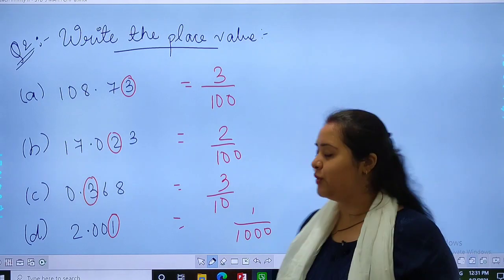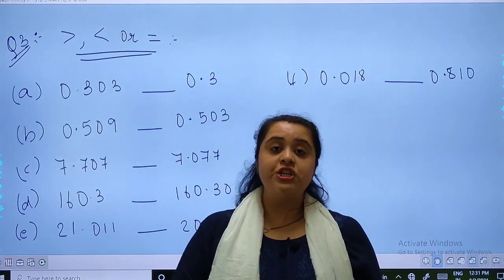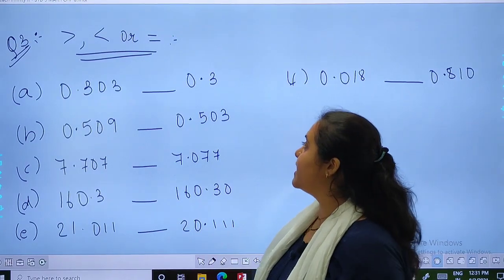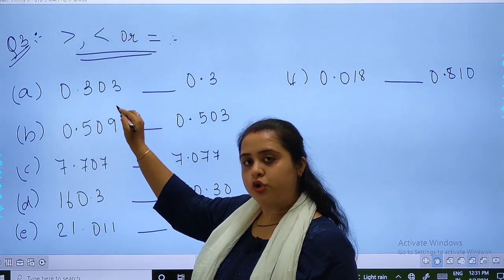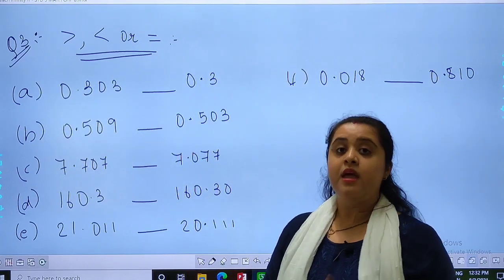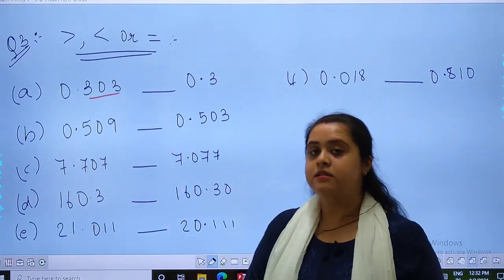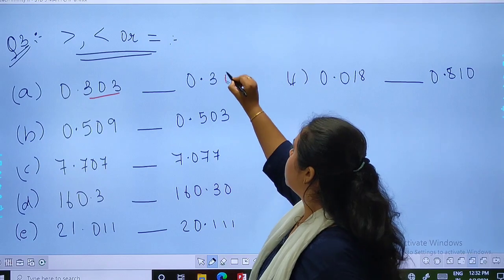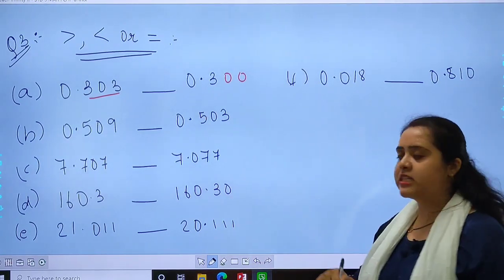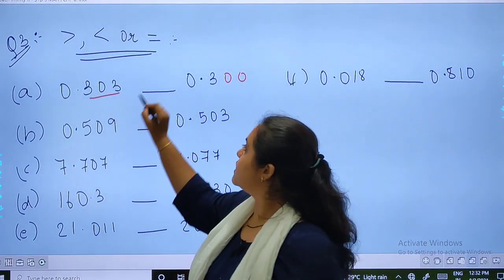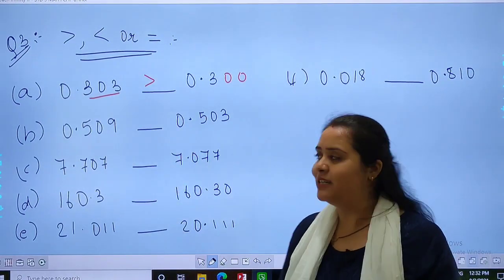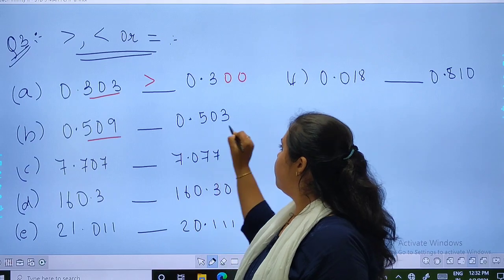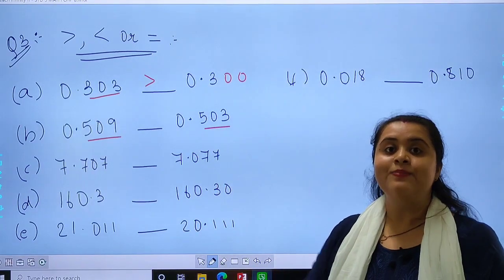Let's move to question number 3. Question number 3 is you are supposed to use greater than, less than or equal to sign. As you can see, 0.303, 0.3. In this we have 3 decimal places. In this only 1 is there. So we will assume that the rest 2 places are 0. Now it becomes very easy for us to judge. Now, 3.03 is greater. Let's go to the second. Focus on the decimal places. 5.09, 5.03. Which one is greater? 5.09.